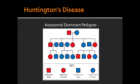How does neuronal death happen in Huntington's Disease? Neuronal death can happen due to NMDA receptor binding and glutamate toxicity.